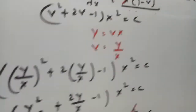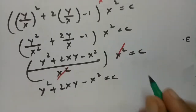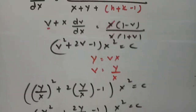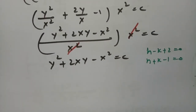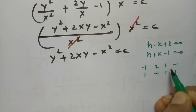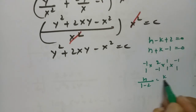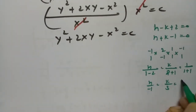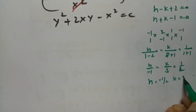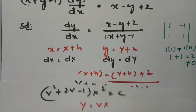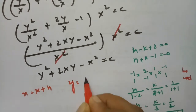Now finding h and k from the conditions h - k + 2 = 0 and h + k - 1 = 0. Solving these two equations simultaneously gives h = -1/2 and k = 3/2. Substituting back: capital X = small x + 1/2 and capital Y = small y - 3/2.